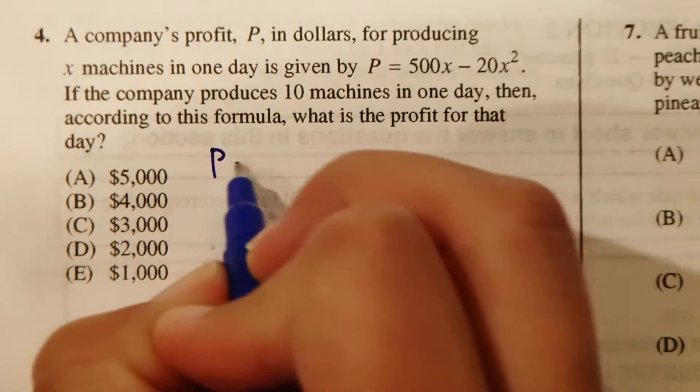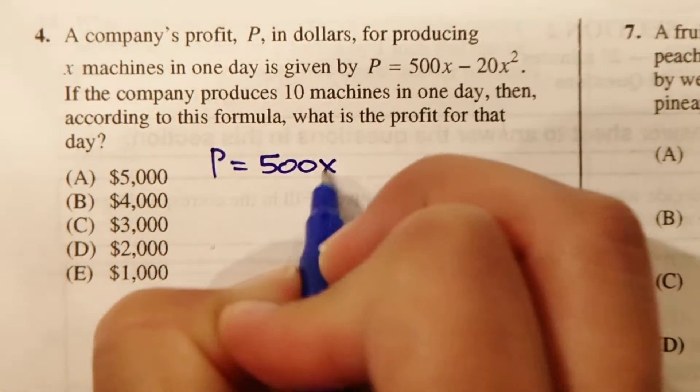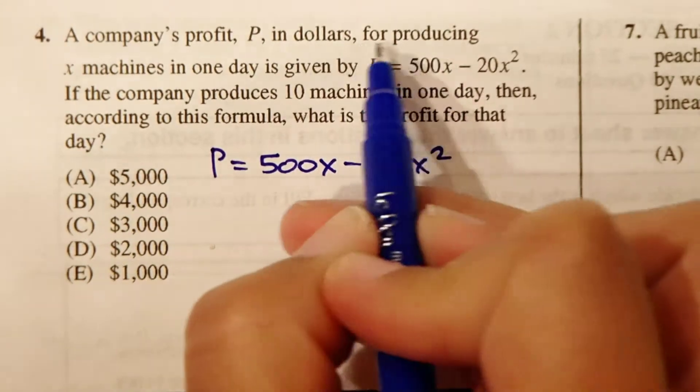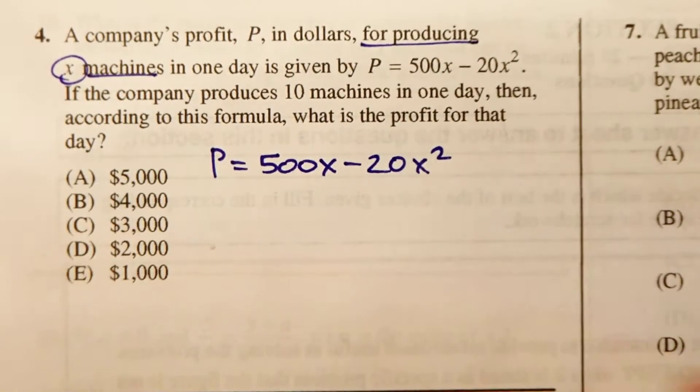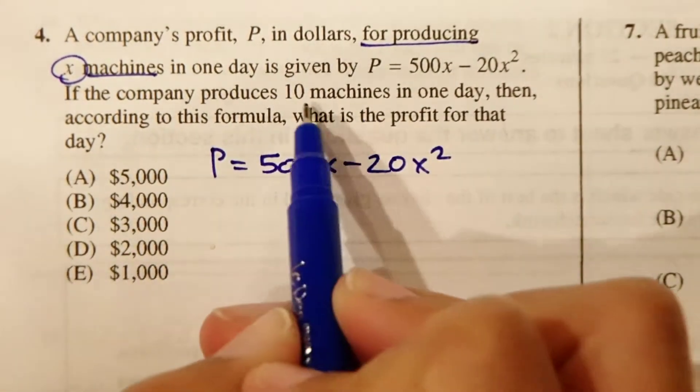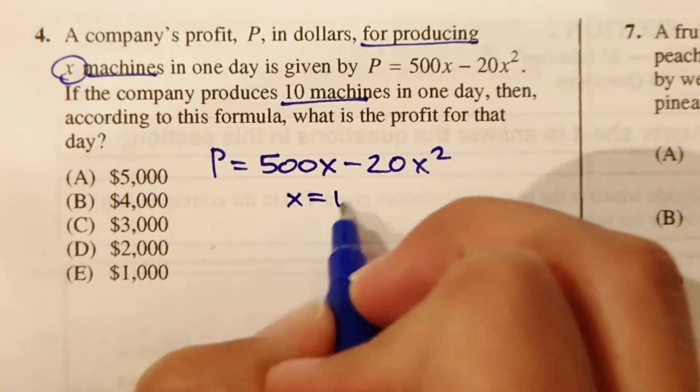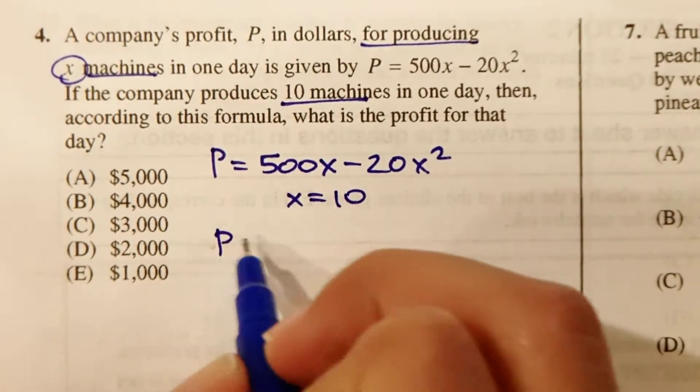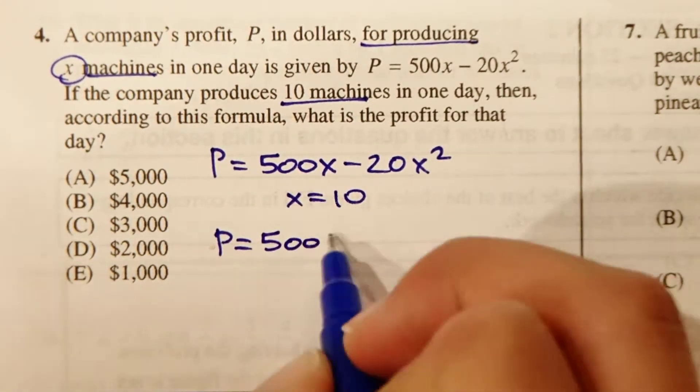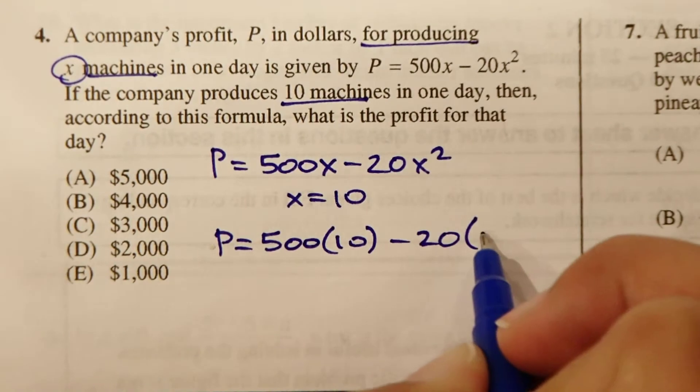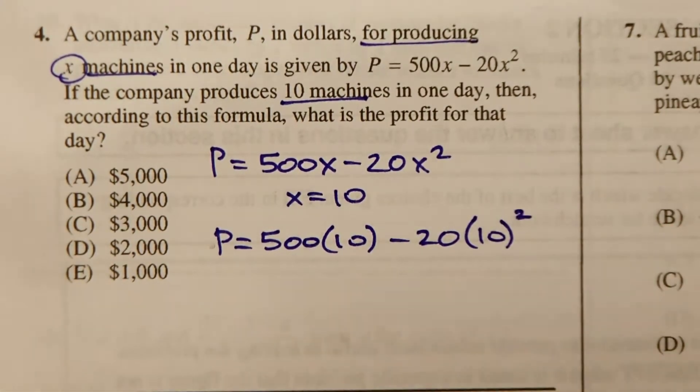So here's our profit formula, 500x minus 20x squared. They're telling us if the company produces 10 machines in one day, then we know that x equals 10. So now we just need to go back and plug in 10 to this function in order to find the total.